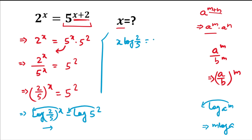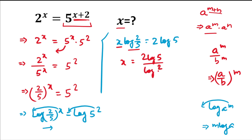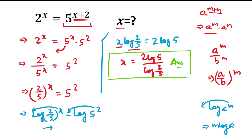Similarly, we take 2 to the front on the right hand side, giving 2·log(5). To find the value of x, we divide both sides by log(2/5), so x equals 2·log5 divided by log(2/5). This is the answer to the problem. Hope you enjoyed the video — don't forget to subscribe and thank you for watching.